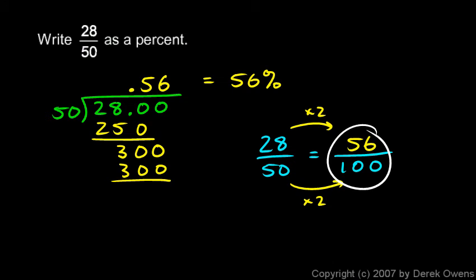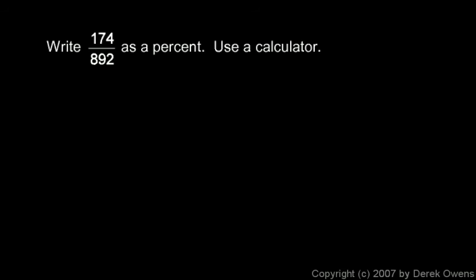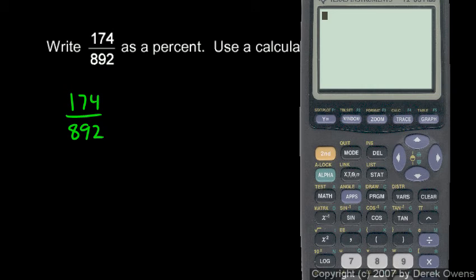Okay, one more example. I'm told to write 174 over 892 as a percentage, and I'm told to use a calculator. So I want to take this fraction, 174 over 892 - I could divide that by hand, but it's going to be a lot easier to pull out the calculator and just type it in. So 174 divided by 892, and I get 0.1950672646.